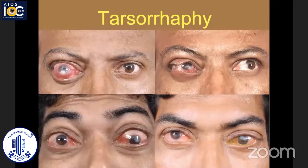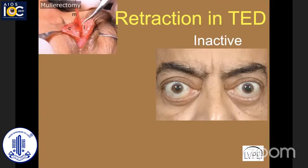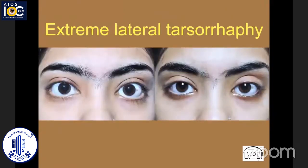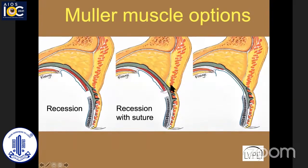Tarsorrhaphy can be a very good tool, especially in the active phase of the disease, and we do occasionally see patients with exposure keratitis where tarsorrhaphy would be useful. For retraction in the inactive phase, the options we have are millerectomy, levator recession surgery, and full-thickness blepharotomy. Before we discuss those, I feel that an extreme lateral tarsorrhaphy is a very good option in cases with mild temporal flare — both upper and lower eyelid. It's very predictable and easy to perform. Müller muscle options include either recession alone, recession with suture fixation to the levator, or millerectomy.